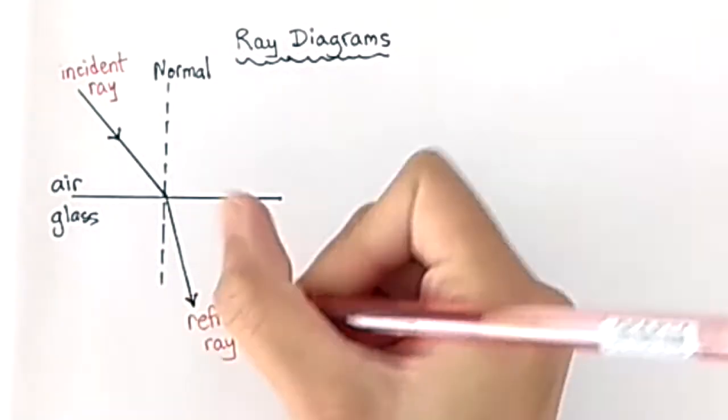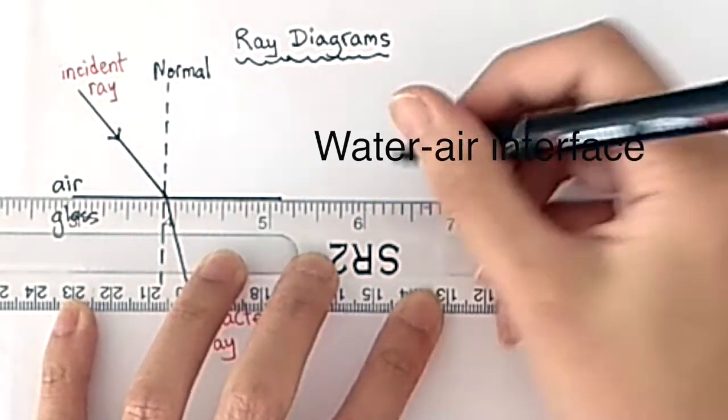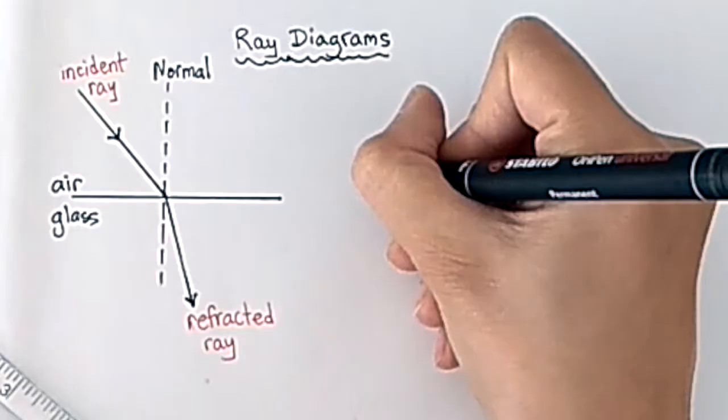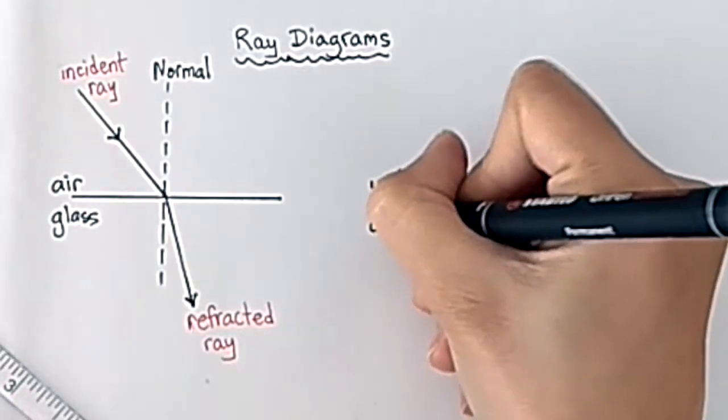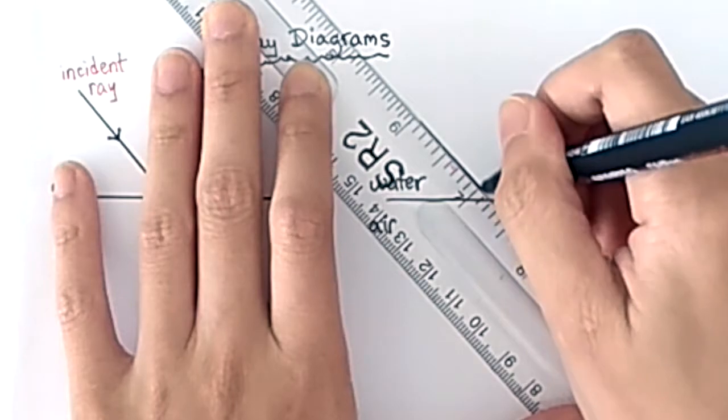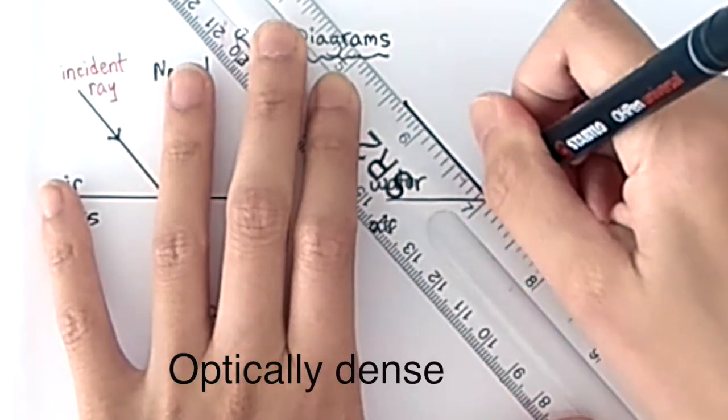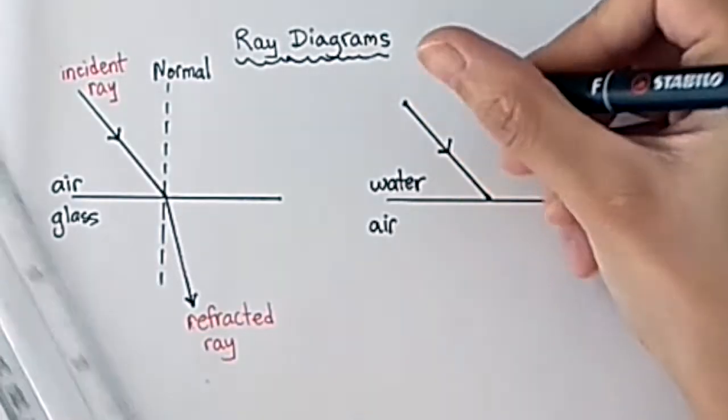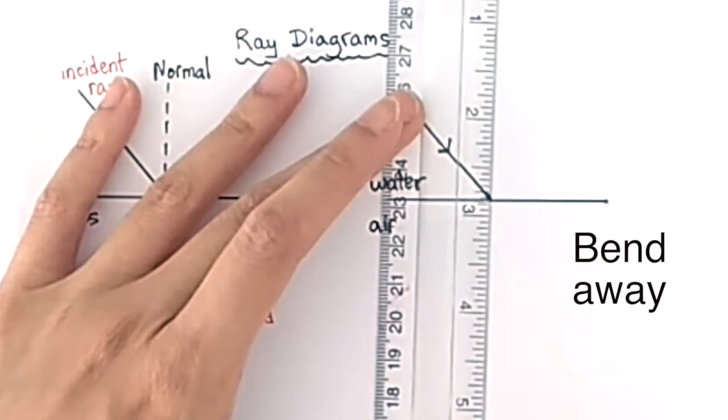In the next example, I am going to draw a water-air interface. This means that my incident ray is going to travel through water first before it enters the air. Water is more dense, so my light ray is going to speed up when it enters air. According to my first rule, it's going to bend away from normal.